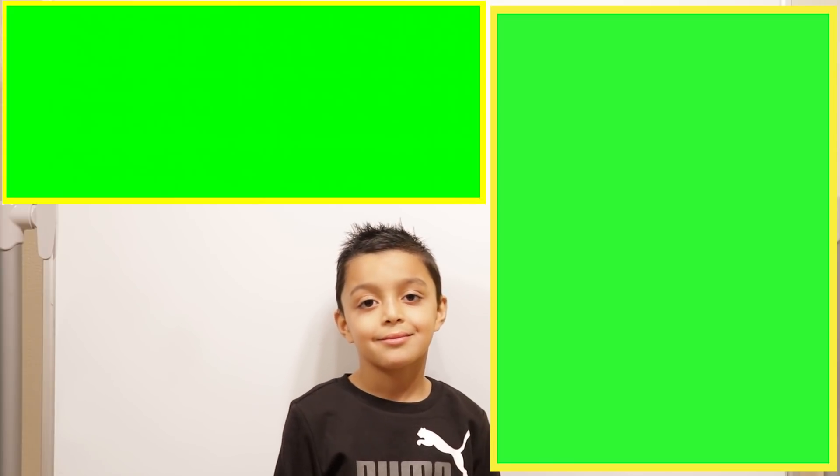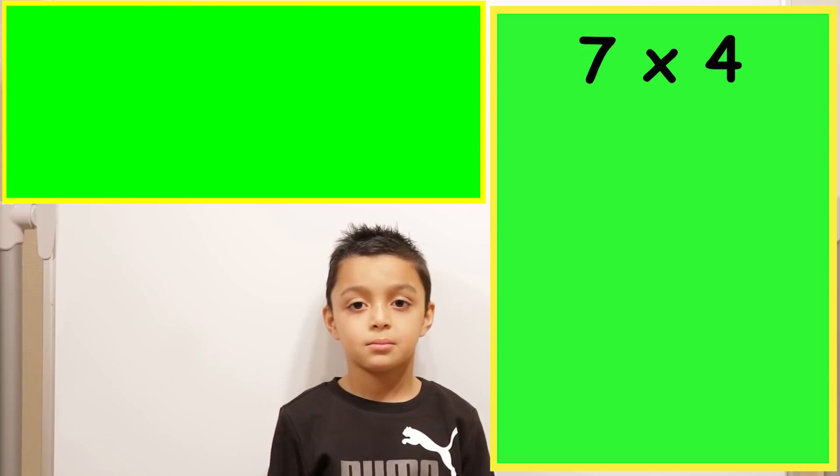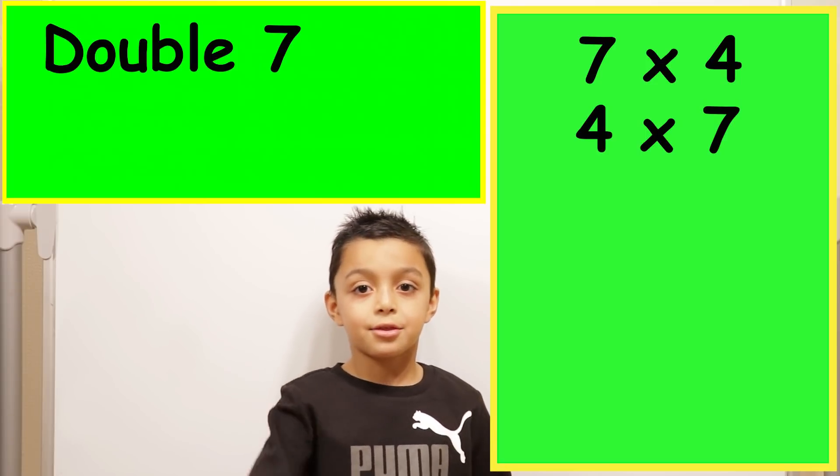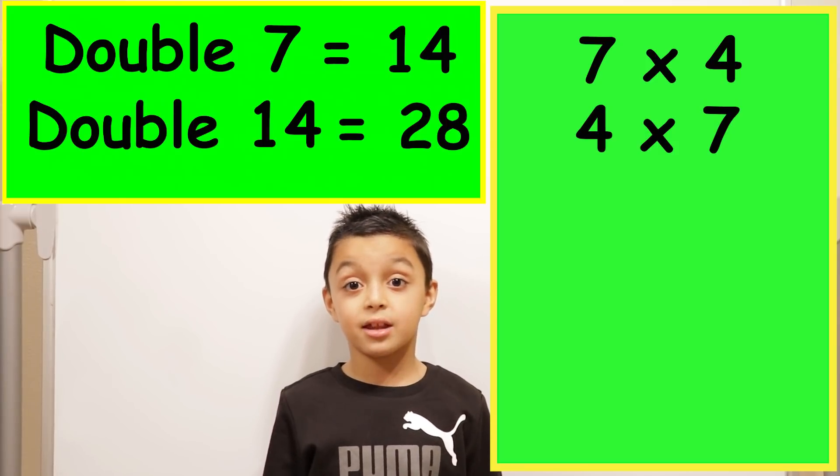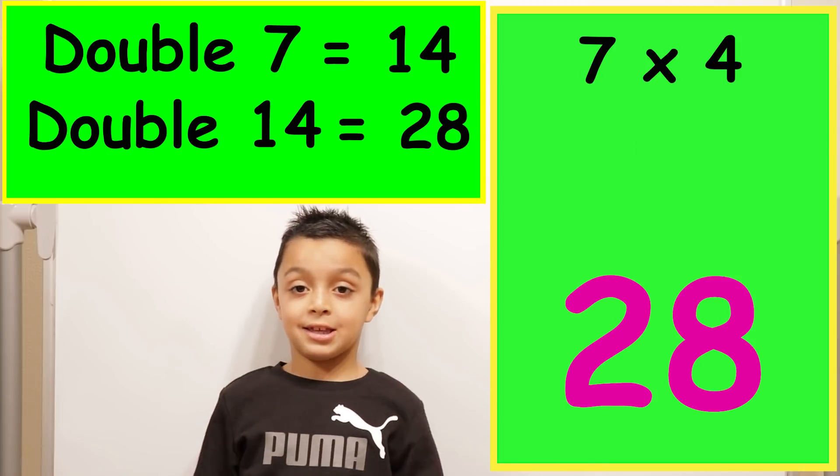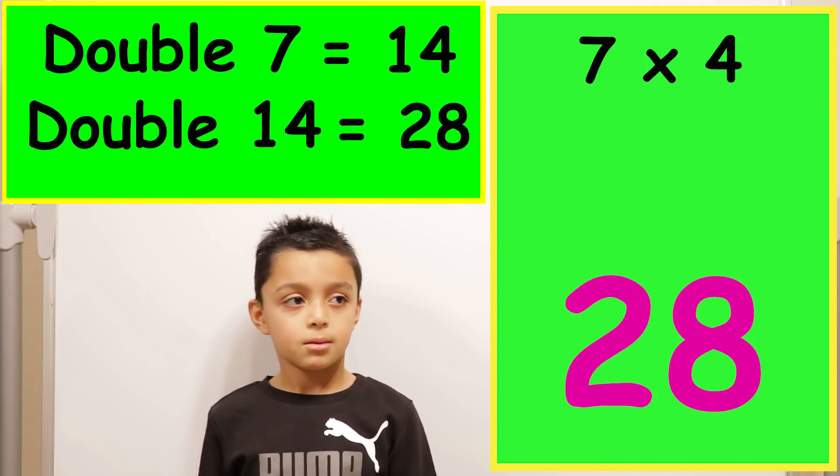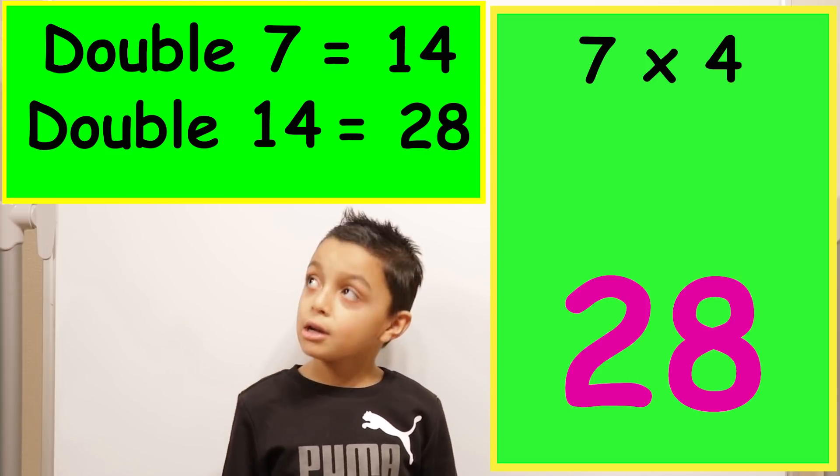Let's do another one. Let's do seven times four. So I want you to swap it around first. So four times seven. Yes. And then double the seven and double again. Okay. So double seven equals fourteen. Yeah. And then double fourteen equals twenty-eight. So the answer is twenty-eight. So you've just worked out seven times four without using your fingers. True. Because you know how to double.